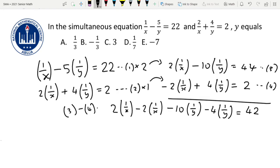The good thing about this is that 2(1/x) cancels, so we're left with -10(1/y) - 4(1/y) = 42. When you put them together, you have -14(1/y) = 42.